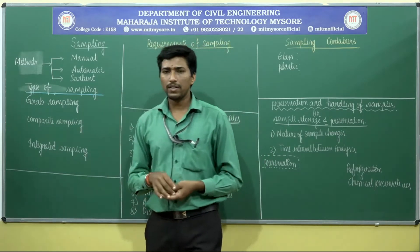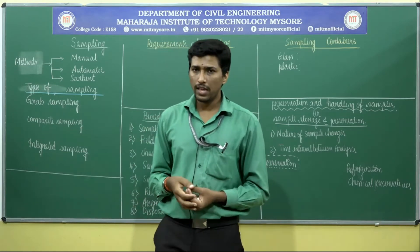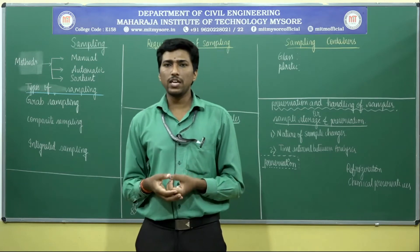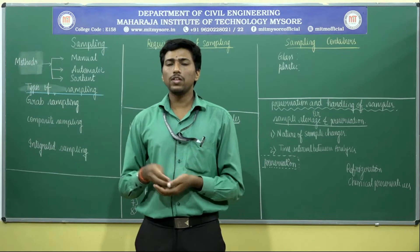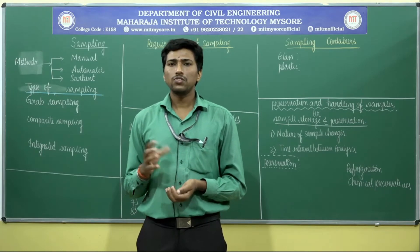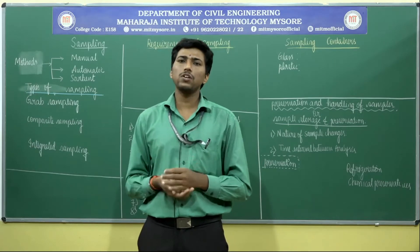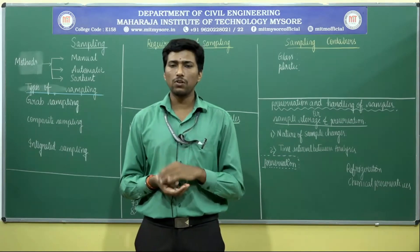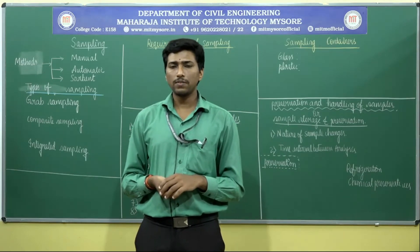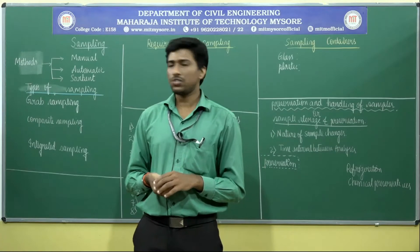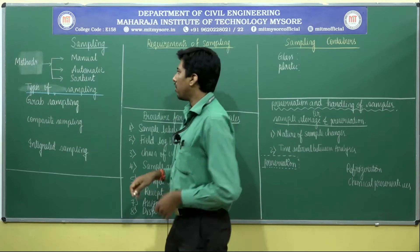The third type is sorbent sampling. For samples that are volatile in nature and cannot be captured easily, collection is done through adsorption — the accumulation of particles or liquid trapped onto the surface of a material due to van der Waals forces of attraction. This kind of sampling is called sorbent type of sampling.